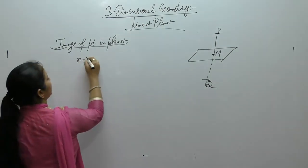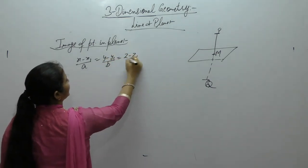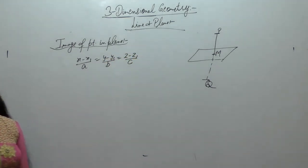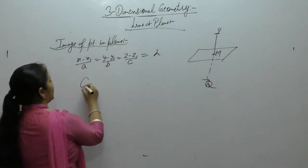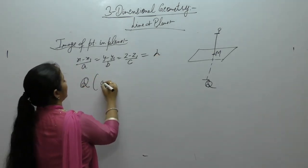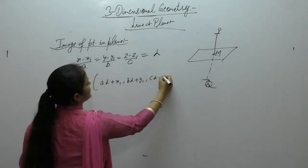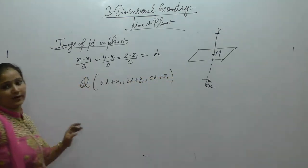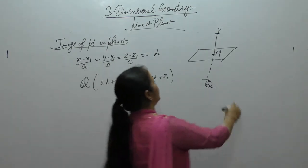Equation of line is X minus X1 upon A, Y minus Y1 upon B, Z minus Z1 upon C. Write the coordinates of Q that equals to lambda. Then, coordinates of Q will be A lambda plus X1, B lambda plus Y1, C lambda plus Z1.